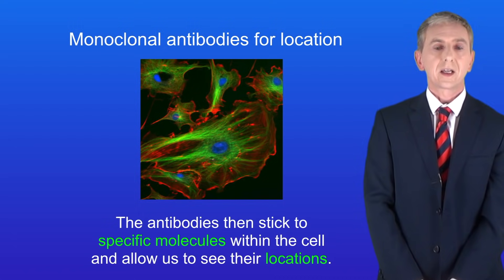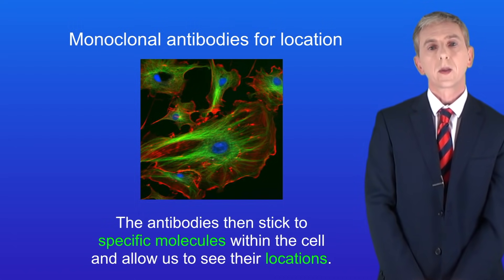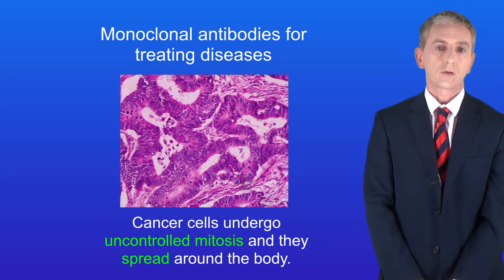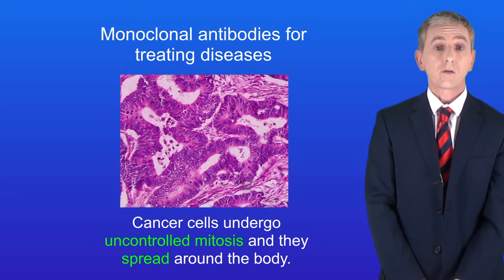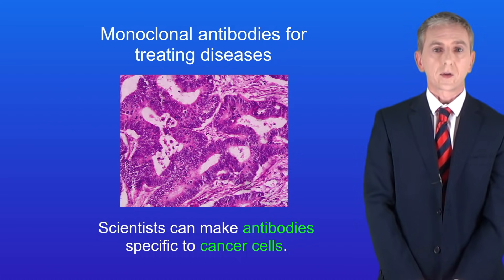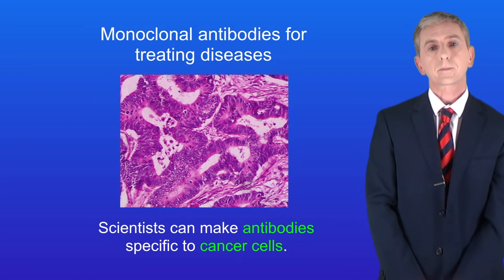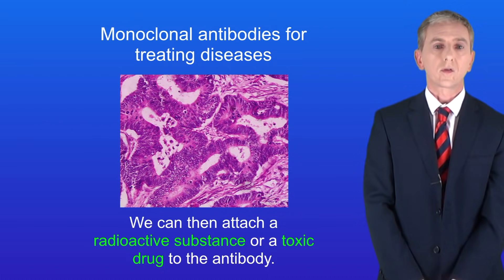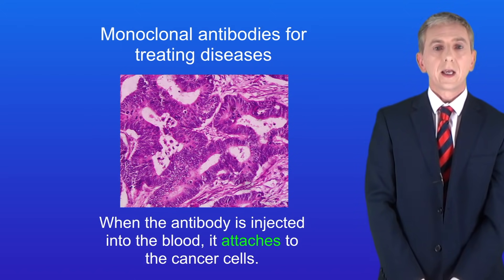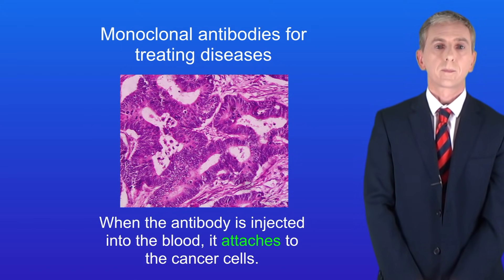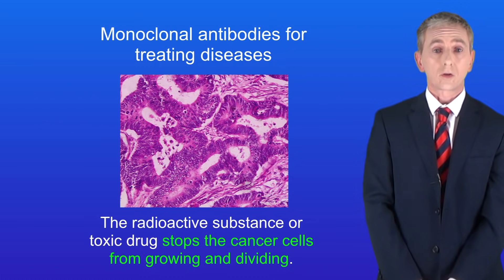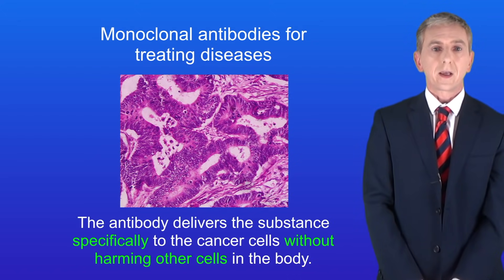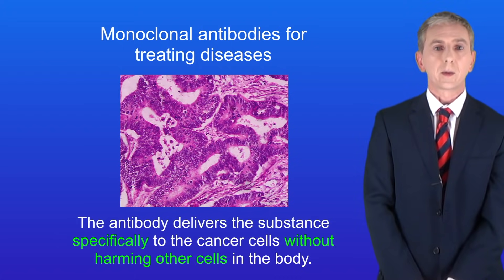The final use of monoclonal antibodies is in treating diseases. Cancer cells undergo uncontrolled mitosis and spread around the body. Scientists can make antibodies specific to cancer cells, then attach a radioactive substance or a toxic drug to the antibody. When the antibody is injected into the blood it attaches to the cancer cells, and the radioactive substance or toxic drug stops the cancer cells from growing and dividing. The advantage is that the antibody delivers the substance specifically to the cancer cells without harming other cells in the body.